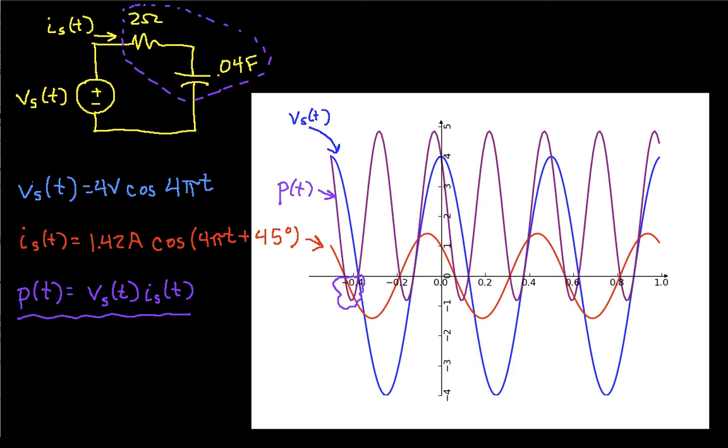which means that the combination of the resistor and the capacitor are actually supplying power to the source. And in fact, what would actually be happening there is that energy stored by the capacitor is being returned to the source. So the issue is that the instantaneous power fluctuates with time.